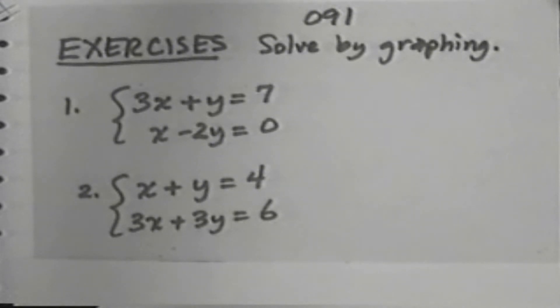For exercise 2, x plus y equals 4. x plus y equals 4. 3x plus 3y equals 6. 3x plus 3y equals 6.